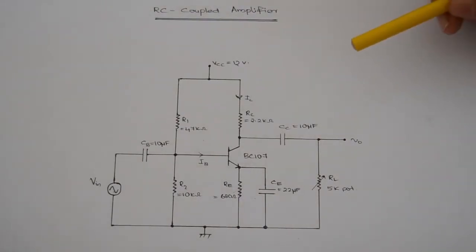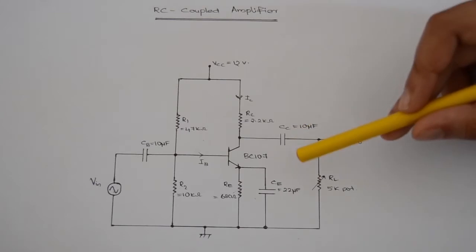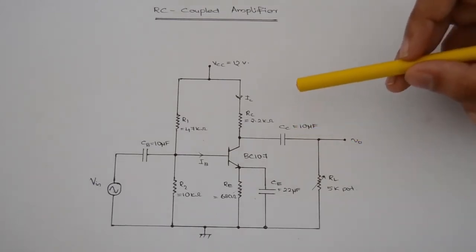For distortionless output, the operating point must be kept at the middle of the load line. This means that output voltage swing in either positive or negative direction is half of VCC.